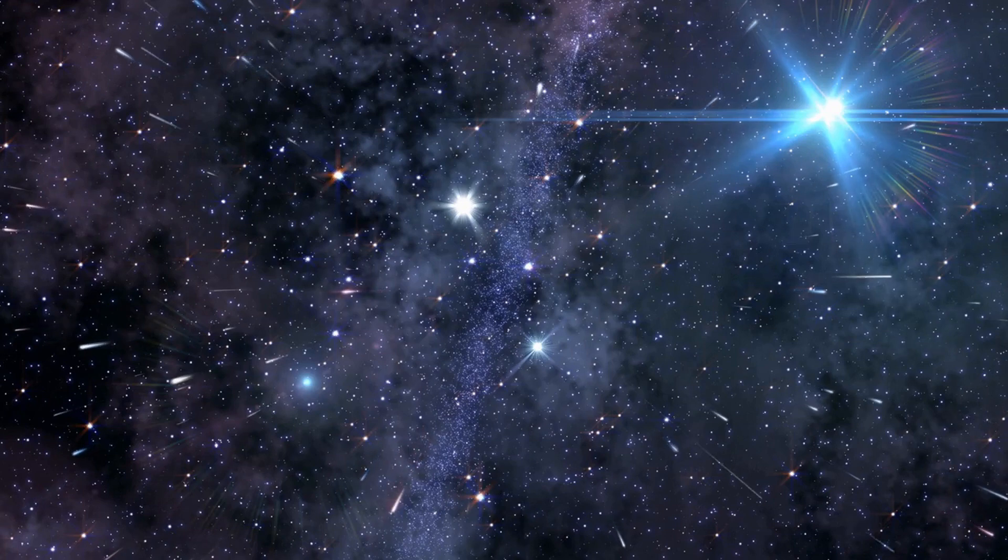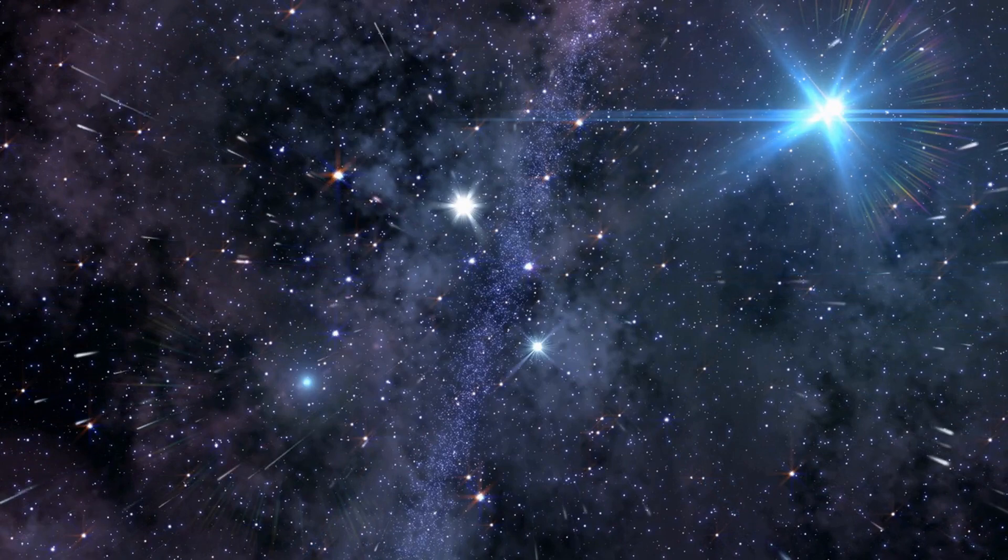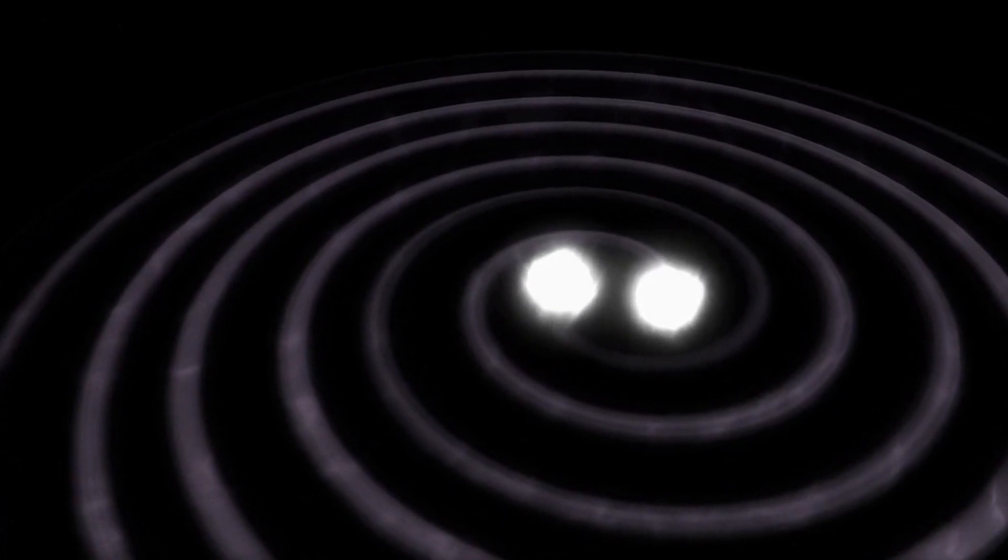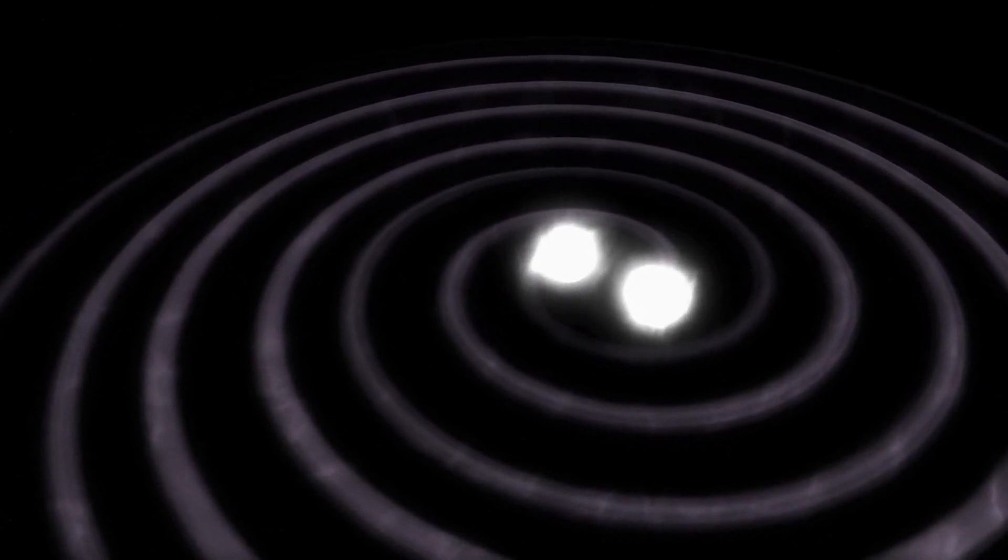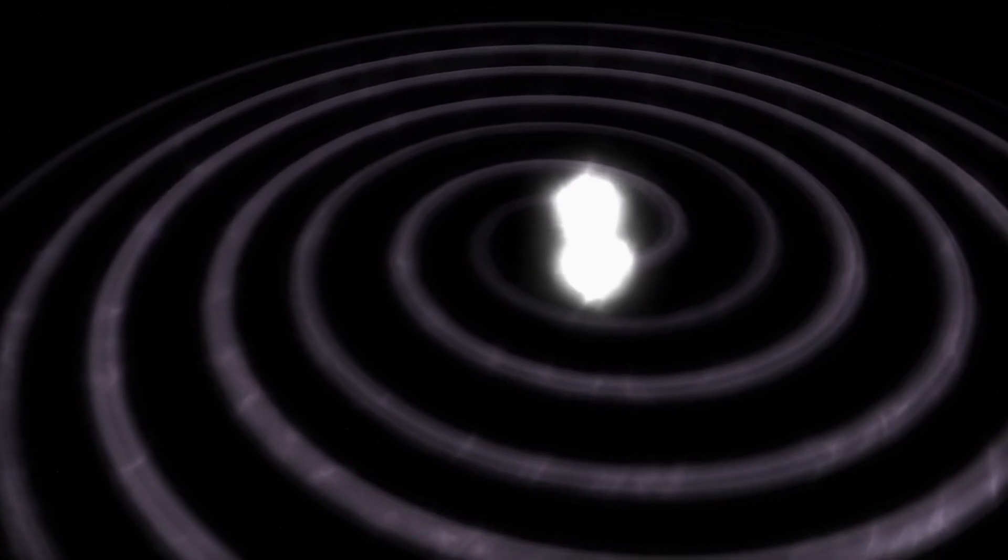Neutron stars are incredibly dense objects formed from the remnants of massive stars that have undergone a supernova explosion. When two of these stars collide, they release a tremendous amount of energy in the form of gravitational waves and high-energy electromagnetic radiation.